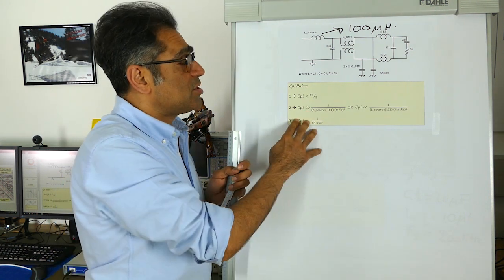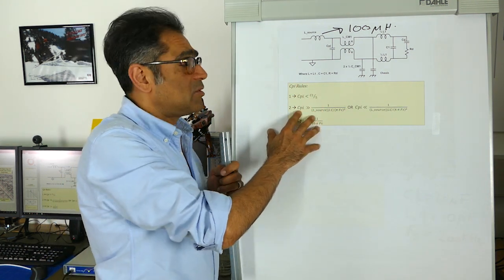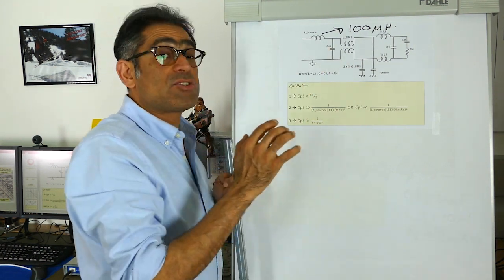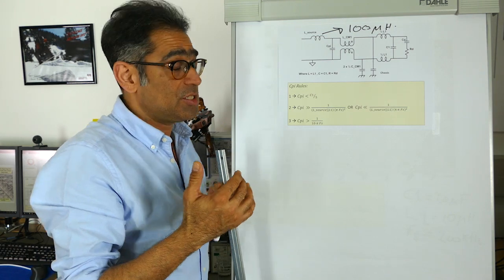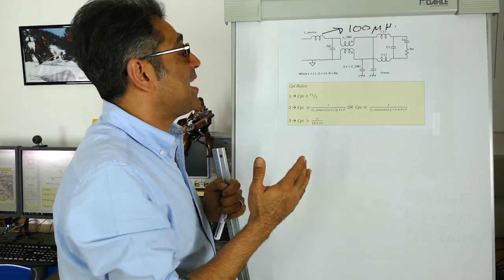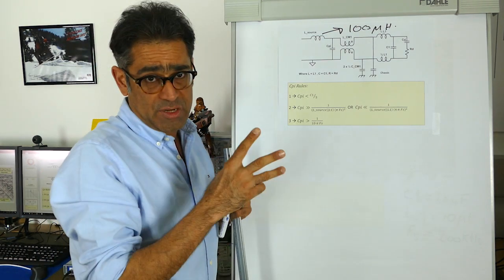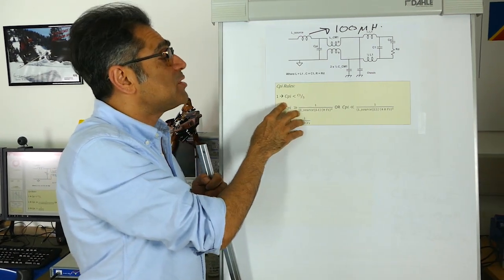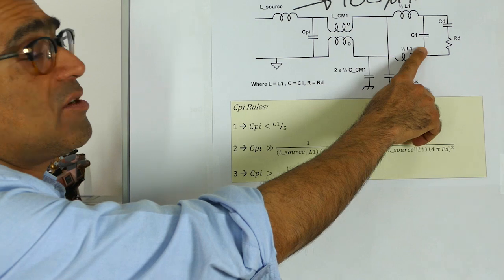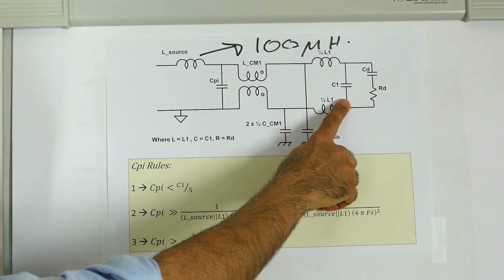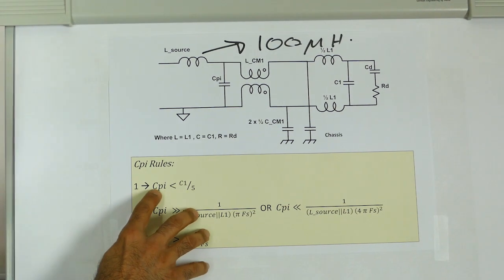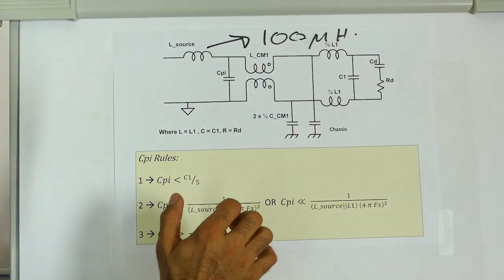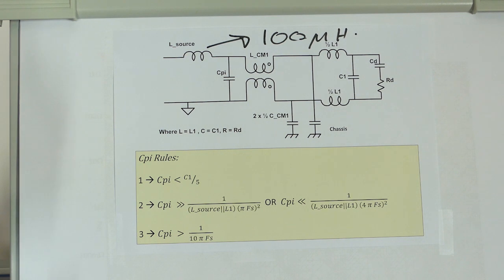Derivation of these equations are actually quite complex and we go through these in our workshops, but for now, in order to size it appropriately so that it does not cause oscillations or does not behave badly, you need to follow three rules. First of all, Cpi, the size of this, has to be smaller than one-fifth of C1. So if you do not make this much smaller than that, then these two will interact and you do not get the cutoff frequency that you require.